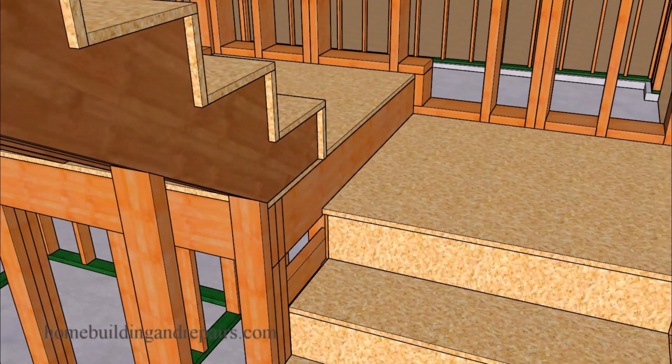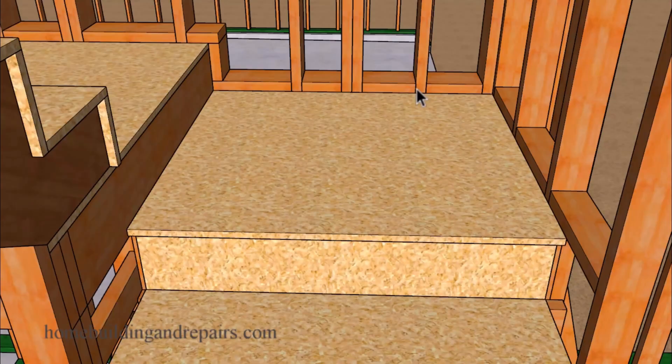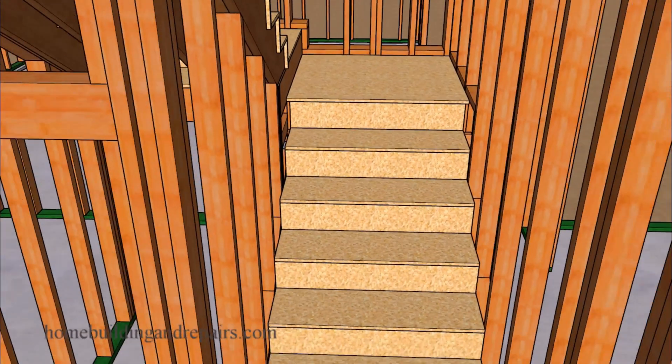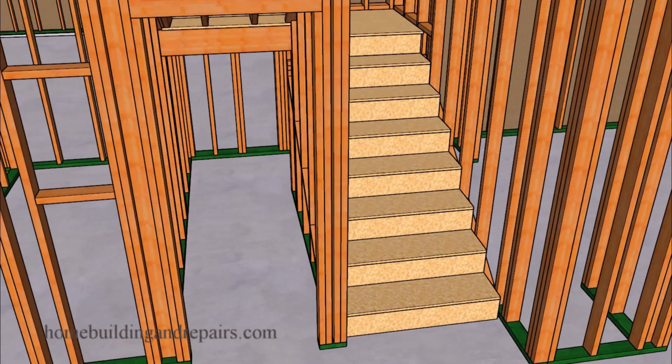Next up let's take a look at the blocking around the perimeter of the landing. Again fire blocking. For those of you wondering why these blocks aren't lower, it's because they also provide nailing for the floor trim and the drywall. This set of stairs has a closet underneath it with a regular door there.